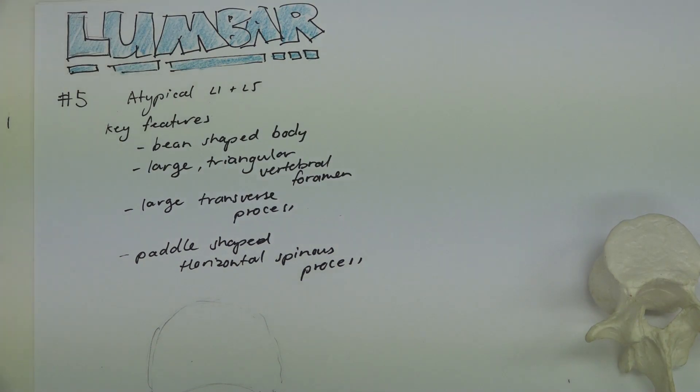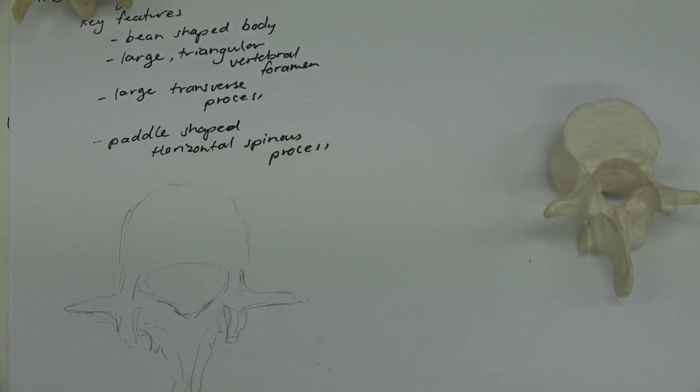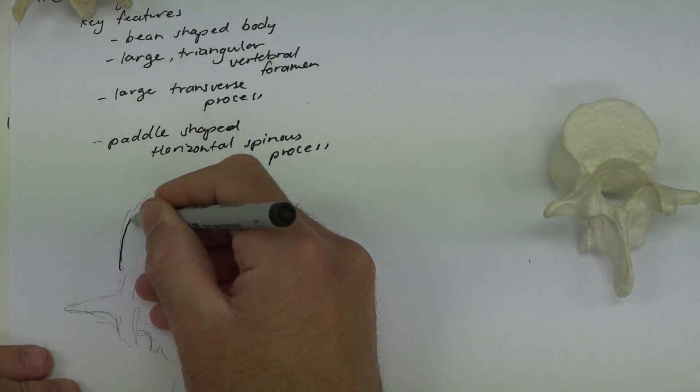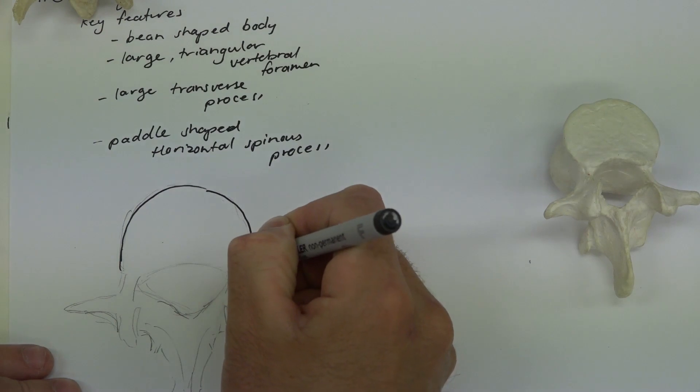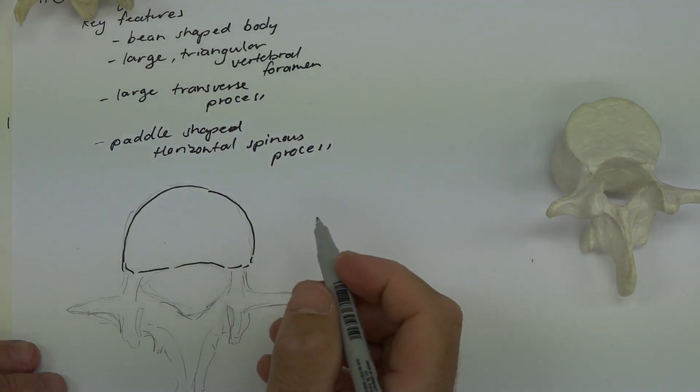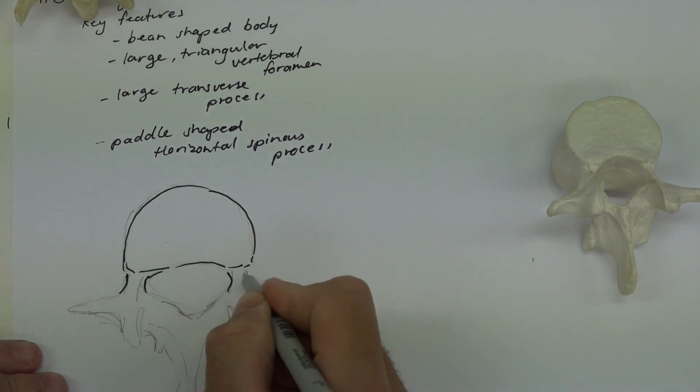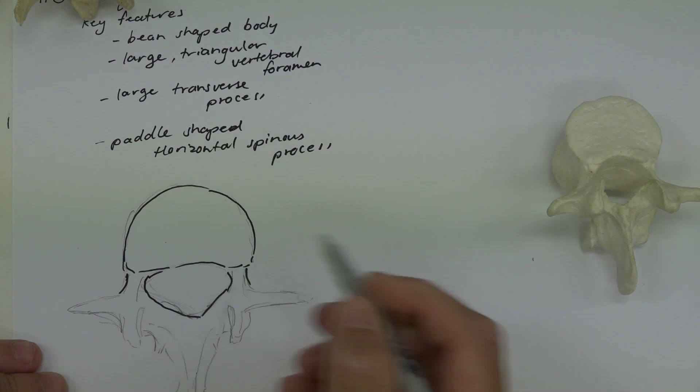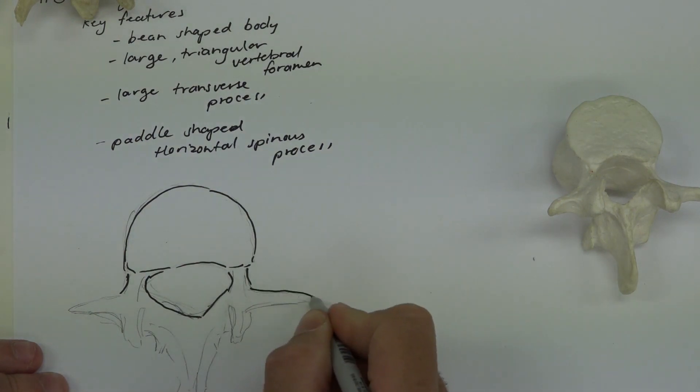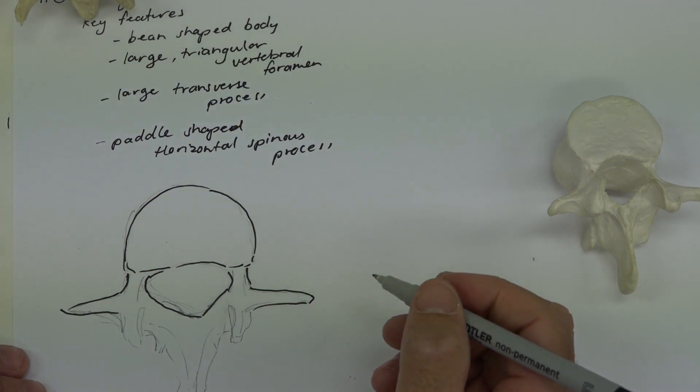So they're going to be our key features around the lumbar vertebrae. So let's have a go at labeling those once again, drawing along if you feel like it. So we need our body. It needs to be large and bean-shaped or kidney-shaped. Then here we would have the pedicles and the vertebral foramen obviously extending from that. Transverse processes pointing out to the side, large ones.